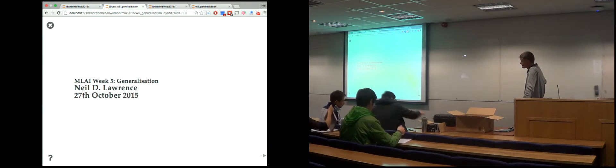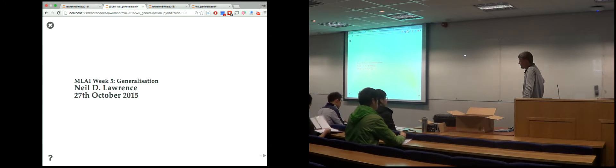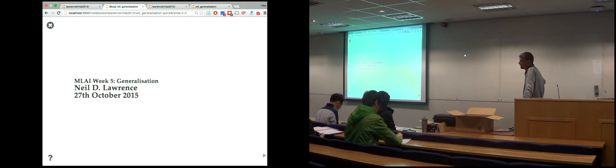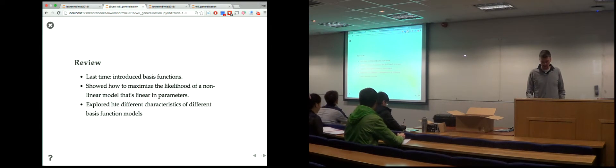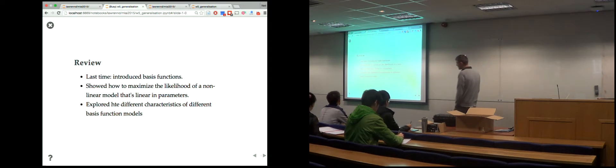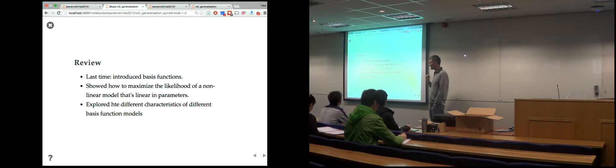Generalization is very important — it's the process by which you check whether your model performs on data which wasn't in your training set. In machine learning, model plus data equals prediction. The prediction on new data is dependent on the quality of the model and the quality of the data. This lecture, we're going to look at basis function models and see how their generalization capabilities vary as we change the number of bases.